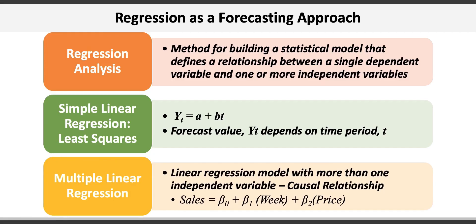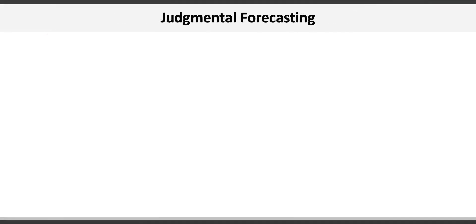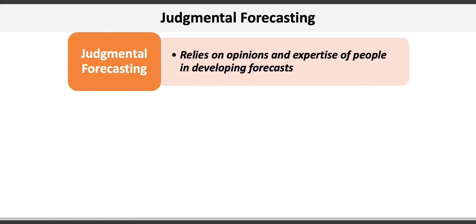Sometimes number-based or quantitative forecasts are simply not appropriate. Perhaps there's not enough time series data, or the data's a mess and there's no visible trend or cycle. That's when we need to rely on the human factor, and that's where forecasting becomes a bit of an art. Judgmental forecasting relies on the opinions and expertise of people in developing forecasts. And there are two common types of judgmental forecasts.